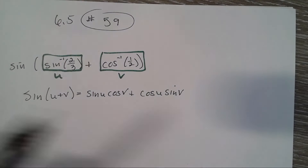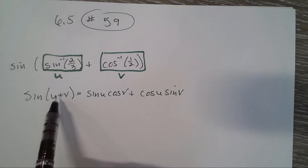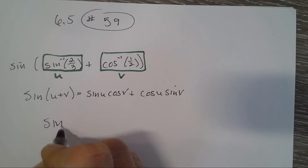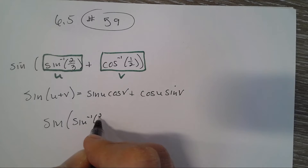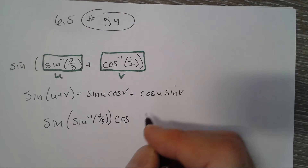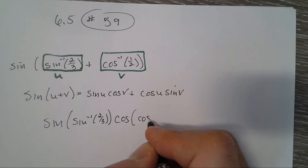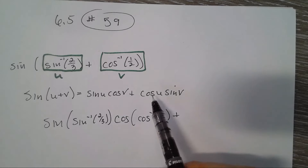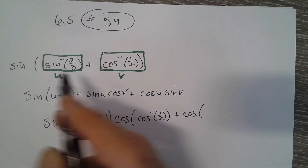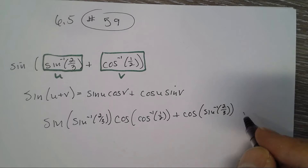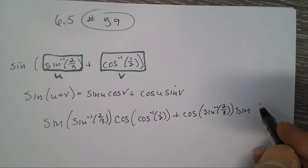The sine of u plus v expands as: sine of u times cosine of v, plus cosine of u times sine of v. So that is sine of inverse sine of two-thirds, times cosine of inverse cosine of one-half, plus cosine of inverse sine of two-thirds, times sine of inverse cosine of one-half.